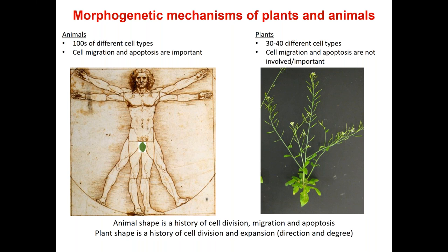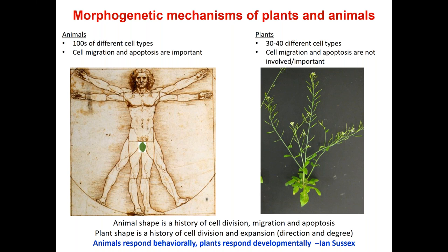We can think of animal shape as a history of where and when cell division occurred, where cells moved, and which cells died. Whereas in plants, the shape is really a history of cell division and largely of cell expansion — particularly the direction and extent of cell expansion. Animals respond behaviorally; if it's too hot, we move to get in the shade. Plants don't have that option, so they respond developmentally and biochemically, by producing molecules that effectively serve as sunscreens, for example.